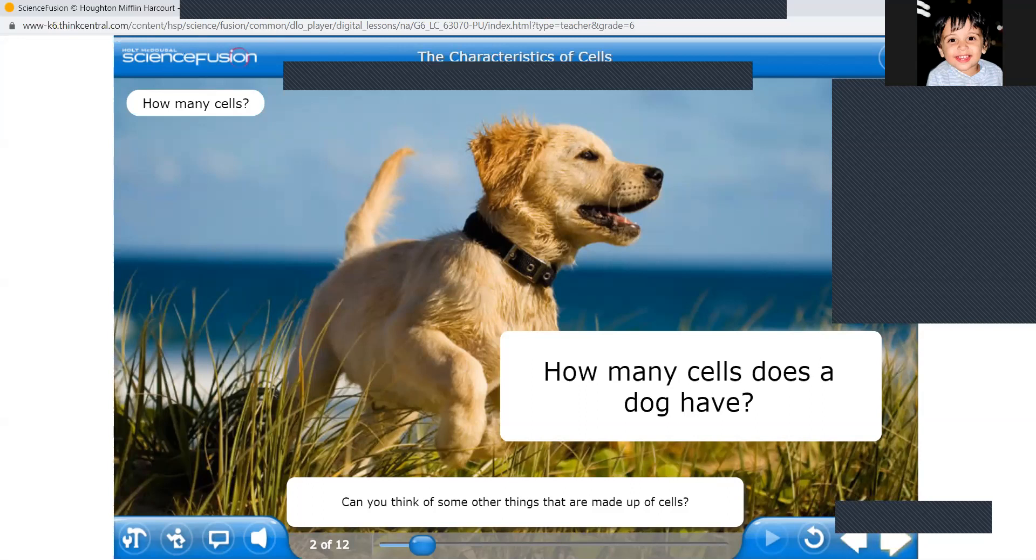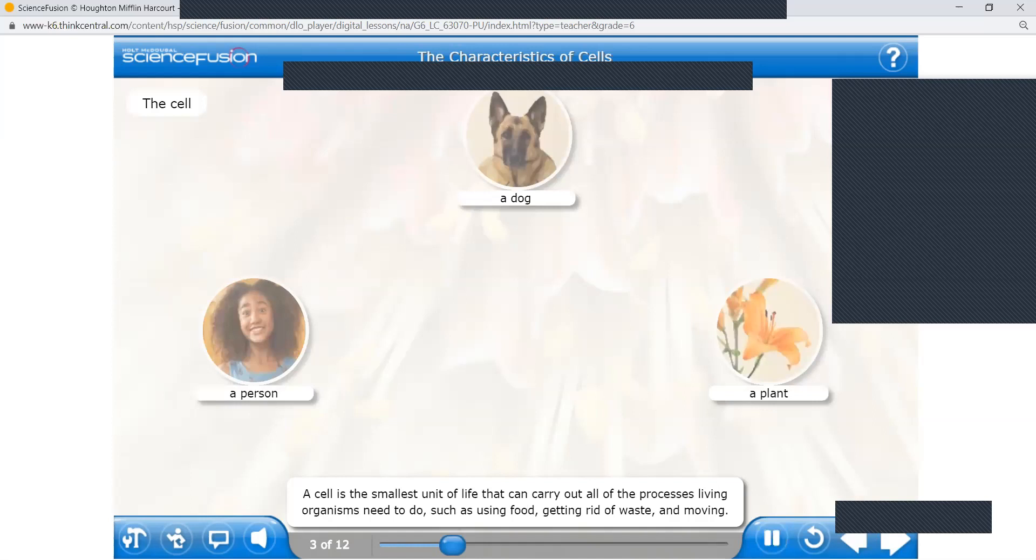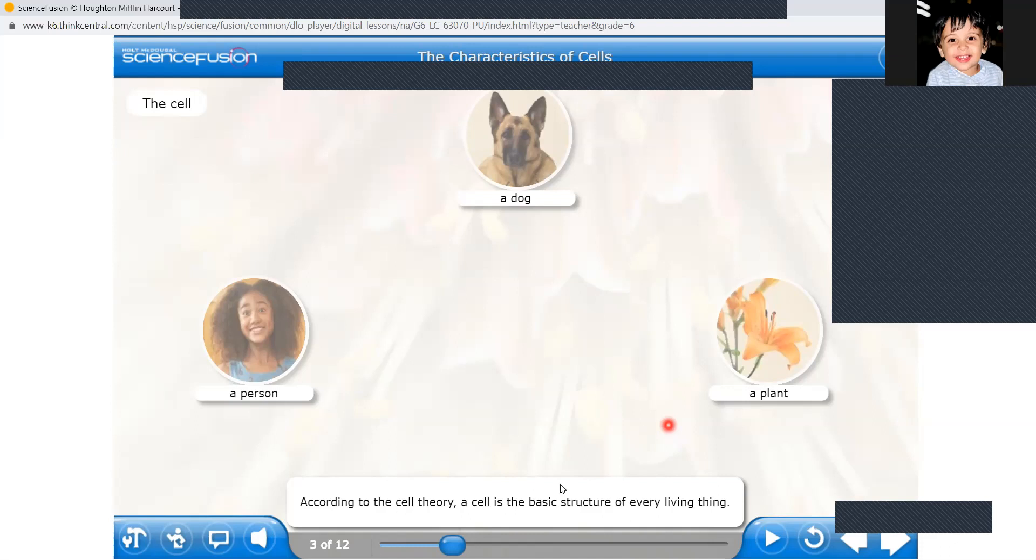But at the bottom line, all the living organisms or all the living things are made of cells. A cell is the smallest unit of life that can carry out all of the processes living organisms need to do, such as using food, getting rid of waste, and moving. Cell is the basic structure of every living thing. This line is very important. A cell is the basic structure of every living thing.